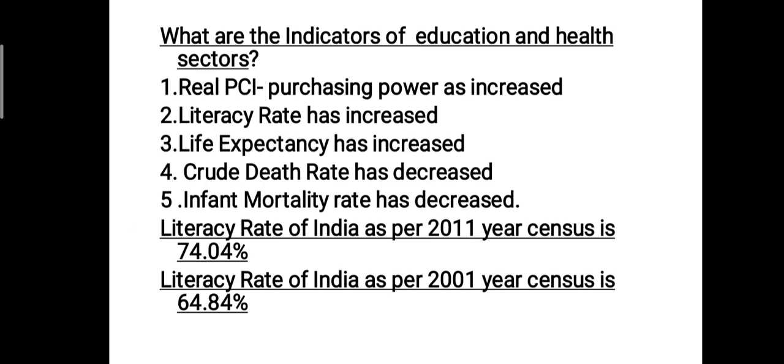Third indicator is life expectancy has increased. Life expectancy means on an average for how many years the people of a country can live — that is, the average life span of the people. It has increased because of education and better health facilities, which have reduced the crude death rate.